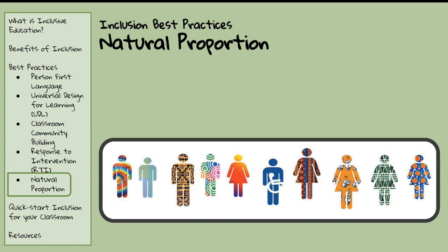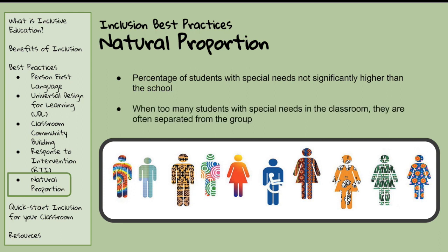Natural proportion is important to keep in mind in an inclusive classroom. Natural proportion ensures that the percentage of students with special needs in any particular class does not significantly exceed the percentage in the school as a whole. This ratio should also be similar to that of the population in the community in which the school is located. If too many students with disabilities are placed together or clustered, the range of needs will make the class difficult to teach and many benefits of inclusive education, such as peer models and high expectations, will be lost. When children with severe disabilities are clustered in the classroom, they are often put in a separate part of the classroom with an aide or paraprofessional, which eliminates opportunities for meaningful interaction with their classmates.